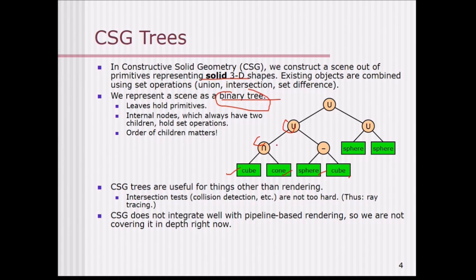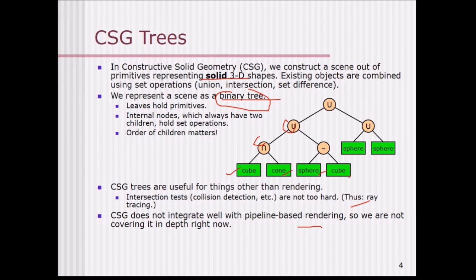CSG trees are helpful for things other than rendering — for example, intersection tests are not very hard, like ray tracing in computer graphics. However, CSG does not integrate well with pipeline-based rendering, so we are not covering these things right now.